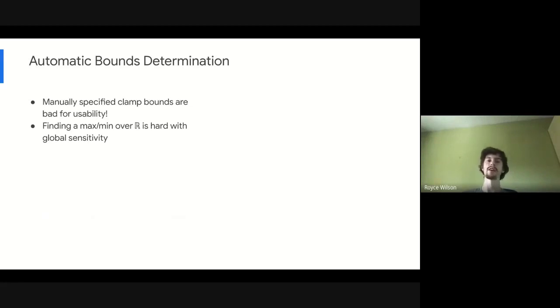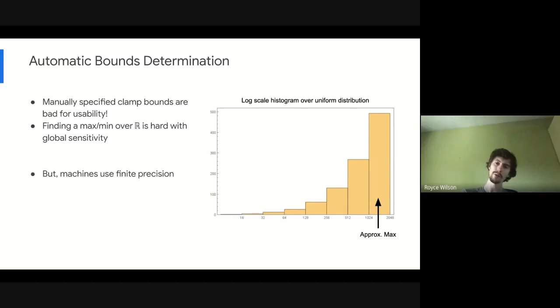But we were able to leverage a couple observations. We're not actually operating over the space of all real numbers. We're operating over machine numbers. So integers and floating point numbers with finite precision and operating in a finite space. And we also don't need super exact bounds. We just need something that's close enough, roughly bounds most of the data. We can clip a couple outliers. The bounds can be a little bigger than they need to be. It just needs to be something close enough to provide a reasonably accurate result.